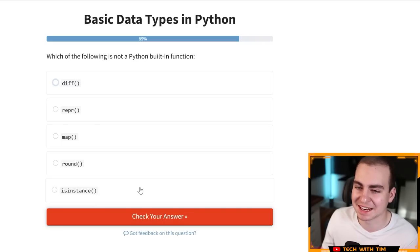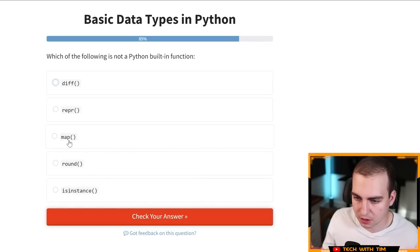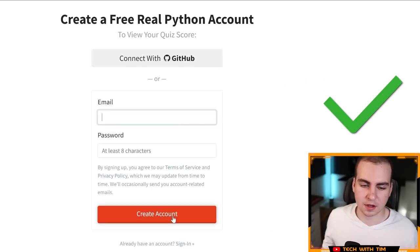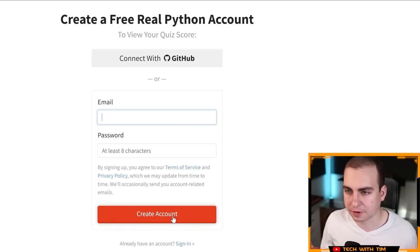Next question. This is supposed to be basic data types. These are really hard for basic data types. Which the following is not a Python built-in function. Okay. So I know map, I know round, I know is instance wrapper. I think it's diff. Okay. Correct. All right, guys, that was a little bit rough. I'm not going to lie to you here. That was a lot more difficult than I thought it was going to be. Let me go back to the main page and see if we can do another quiz and we'll see how hard that one is.